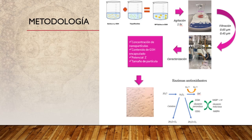En cuanto a la metodología, les comento cómo se hacen las nanopartículas de quitosán y de quitosán con glutatión. Tenemos un sistema con quitosán y glutatión en ácido acético al 1%, y otro sistema con tripolifosfato de sodio también en ácido acético al 1%. El quitosán tiene cargas positivas y el glutatión, bajo estas condiciones de pH, tiene cargas negativas, formando un complejo. Como aún quedan cargas positivas del quitosán, se agrega el tripolifosfato, que es un polianión, para formar las nanopartículas. Se deja una hora de agitación para permitir que se incrementen estas interacciones.